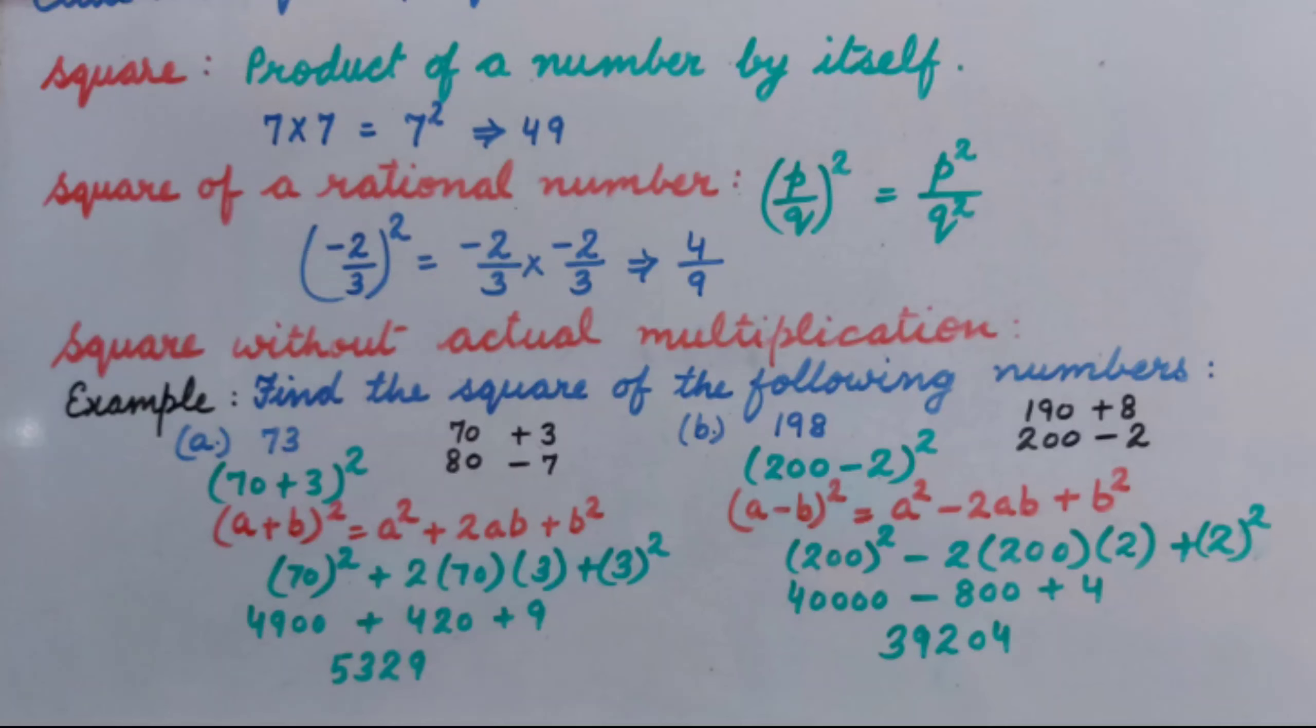For example, minus 2 upon 3 whole square equal to minus 2 upon 3 multiplied by minus 2 upon 3. Minus 2 multiplied by minus 2, product of 2 negative signs, so answer is positive. It is 4. 3 multiplied by 3, it is 9.